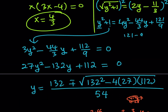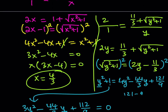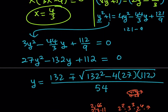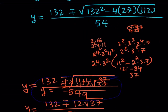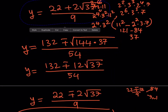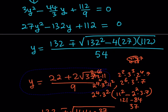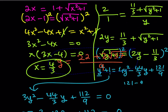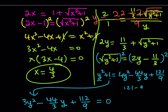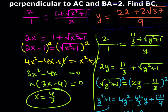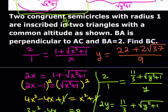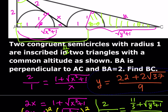What do we do next? We're going to use these two values. x is equal to 4/3. Our goal is to find BC, so let's set up an equation for BC.